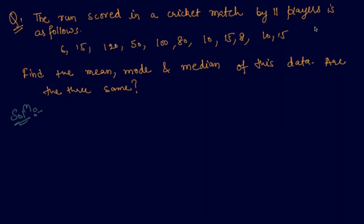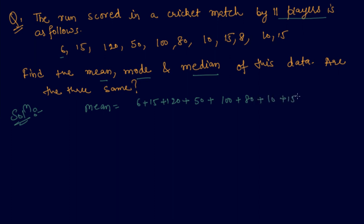Let me give you an example. The question states: the runs scored in a cricket match by eleven players are given — find the mean, mode, and median of this data. In this example you will revise all concepts from my previous two lectures. Mean is the average of all the numbers: add all the numbers and divide by the number of observations, which is eleven.